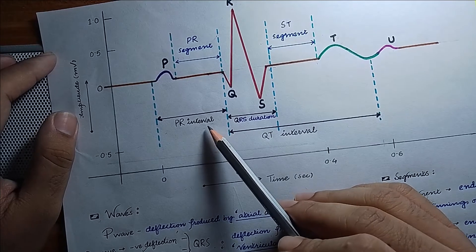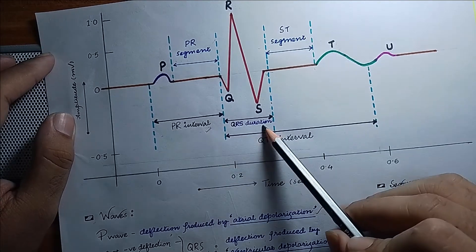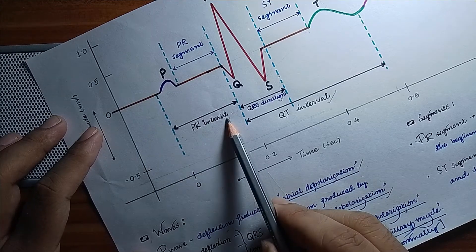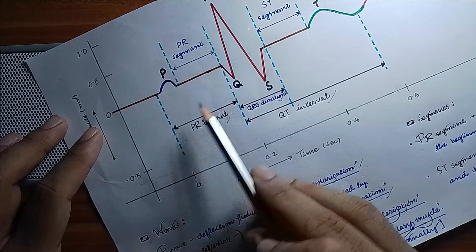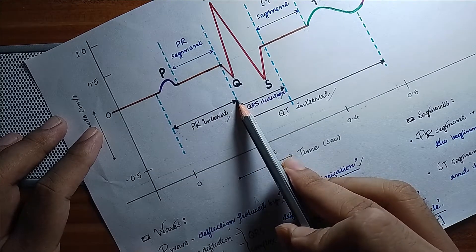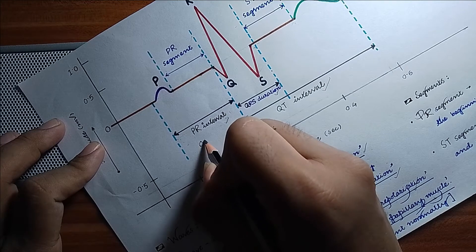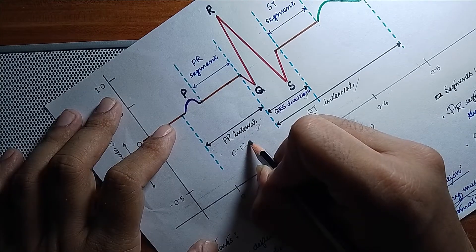There are main three intervals: PR interval, QRS interval, and QT interval. PR interval is the interval between the beginning of P wave to the beginning of QRS complex. The range of PR interval is 0.12 to 0.20 second.